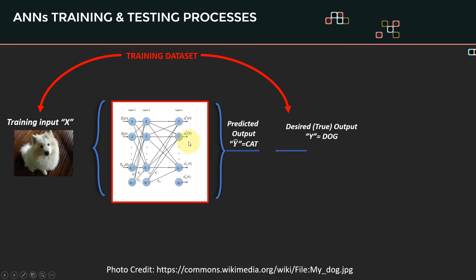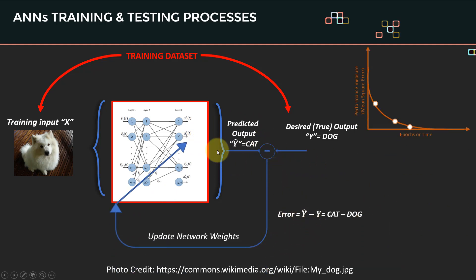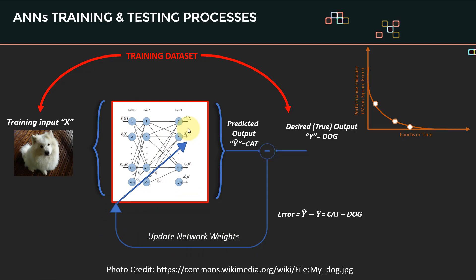To train the network, we calculate the error: the difference between what the model is predicting (y-hat) and the ground truth — in this case, 'cat' minus 'dog.' We take that error, go back, and update the network weights. That is essentially the optimization process. Importantly, neural network training is similar to human learning — we don't learn in one shot, we learn over time through experience, just like 'practice makes perfect.'